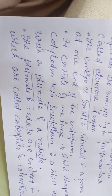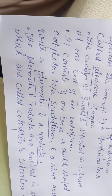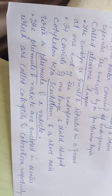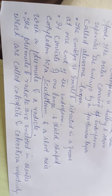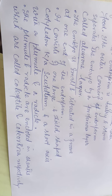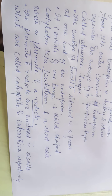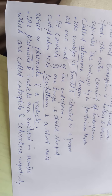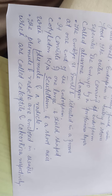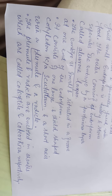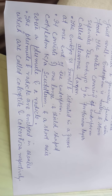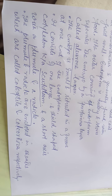The plumule and the radicle are enclosed within sheaths known as the coleoptile and coleorhiza respectively — that is, the plumule is enclosed within the coleoptile, and the radicle within the coleorhiza.